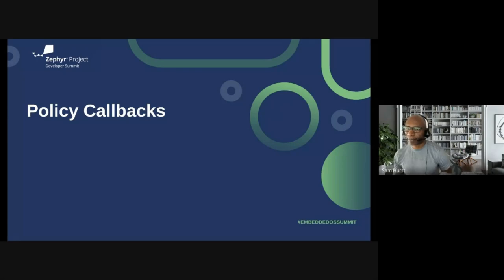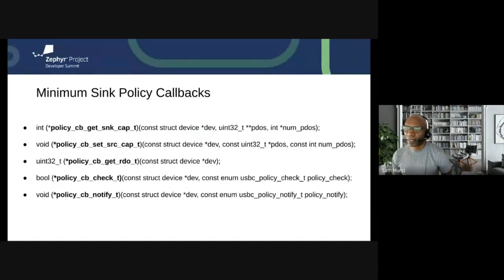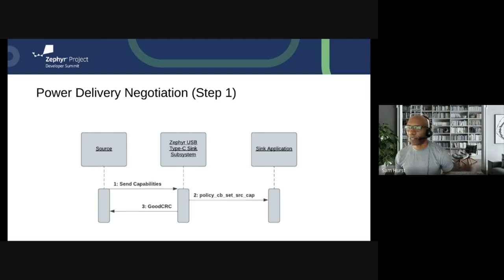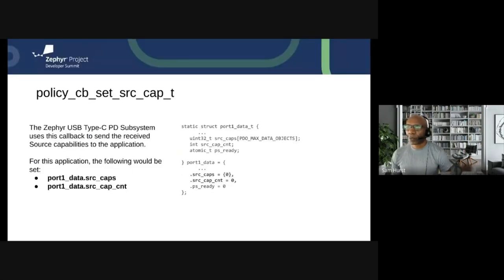Finally, we move on to the policy callbacks. These are the minimum policy callbacks needed to get a sink device up and running. I'll first show a sequence diagram demonstrating how Zephyr uses the callbacks, then present code snippets showing how they're implemented. Power delivery negotiations start with the source sending its capabilities to the sink. The source capabilities are sent to the Zephyr USB Type-C sink subsystem, and Zephyr sends them to the application via the policy callback set_source_cap function. The application should store those capabilities in the source_caps variable of the data structure.